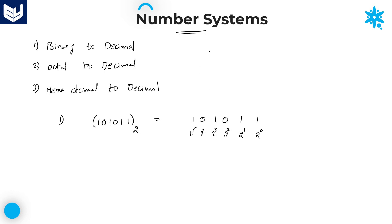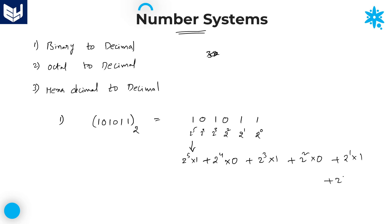See here: 2 power 5 into 1, plus 2 power 4 into 0, plus 2 power 3 into 1, plus 2 power 2 into 0, plus 2 power 1 into 1, plus 2 power 0 into 1. If you observe carefully, anything multiplied by 0 becomes 0, so don't take those values. Only take the numbers which are having 1.